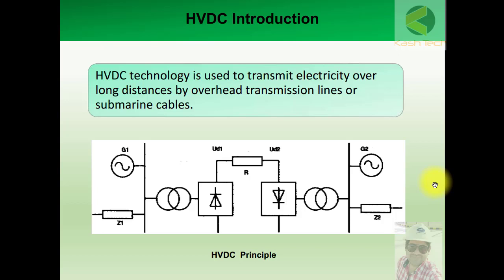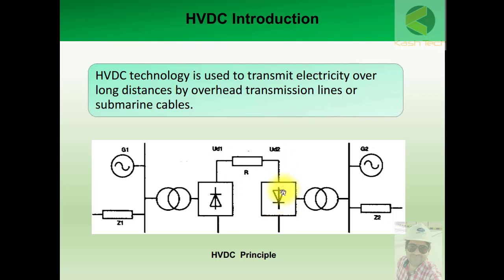This is the simplest form of HVDC system shown on a single-line diagram. Generation is done in an AC system, and using a transformer it is transmitted to a DC substation and converted into DC. At the receiving end, it is again converted from DC to AC, and then with transformers it is further transmitted to another load end.